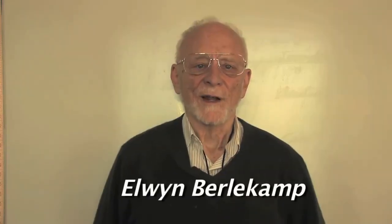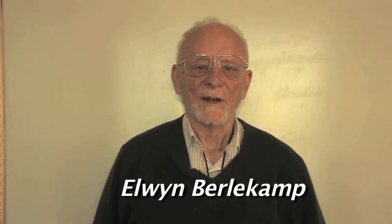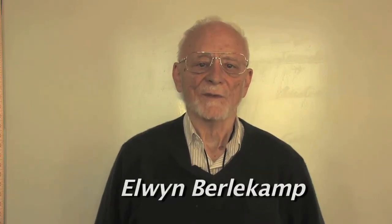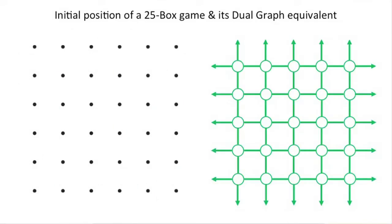Before continuing with further analysis of this particular Dots and Boxes game, let's take a closer look at its relationship to the game of strings and coins. The green graph shows the initial position of the 25-coin game of strings and coins, and it is superimposed on the array of black dots in the initial position of the equivalent Dots and Boxes game. Let's now replay the first half of the game, showing both the Dots and Boxes and the equivalent strings and coins games simultaneously.